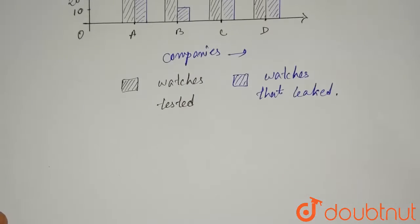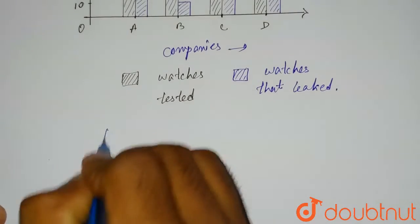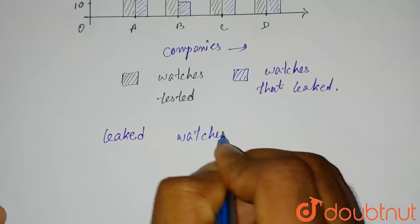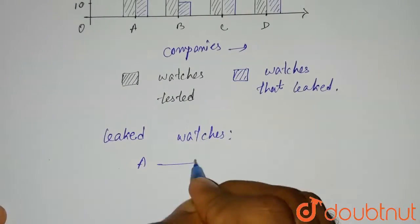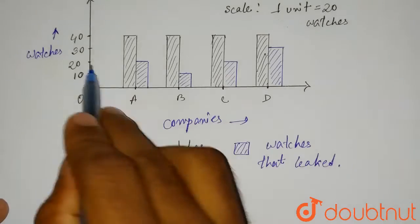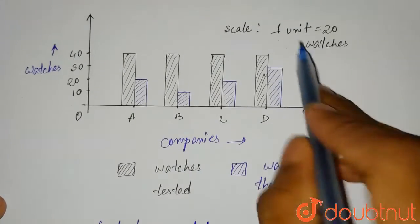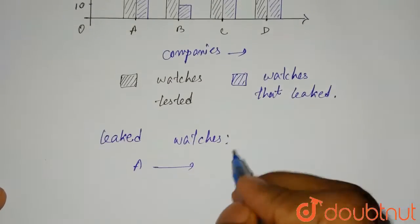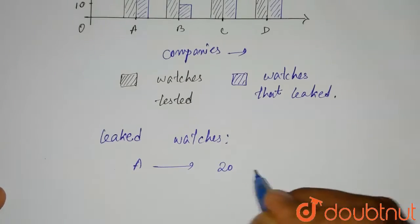So if we write the amount of leaked watches for each of the companies: for A, if we look at the graph, it is 20 units. And here it is given 1 unit is 20 watches. So we will just count the units, so for A it is 20 units.